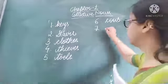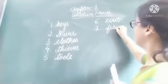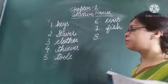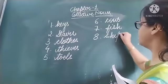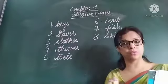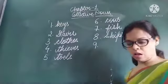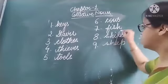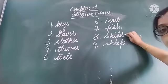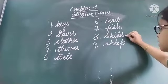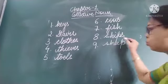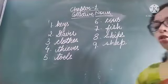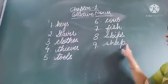A school of fish — many fish together is called a school of fish. A fleet of ships — many ships together form a fleet. A flock of sheep — note that one sheep and many sheep are both spelled the same: sheep.